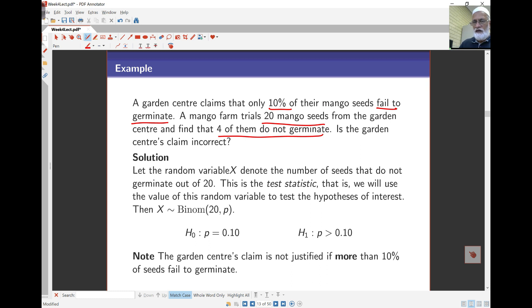The question is, is the garden center's claim incorrect? If the claim is incorrect, that means they're understating the proportion of mango seeds that don't germinate. We start with our probability model: let random variable X denote the number of seeds that do not germinate out of 20, so X has a binomial distribution with n=20 trials and p is the population proportion that don't germinate.